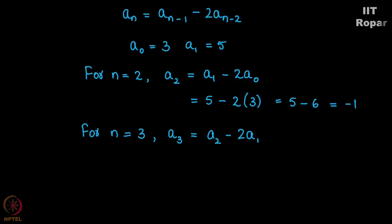A2 is -1 we just found out, A1 is 5, so it is -1 - 2(5) = -1 - 10 = -11. Hence the question has been answered: A2 is -1 and A3 is -11. Let us see another problem now.